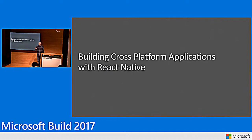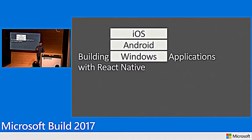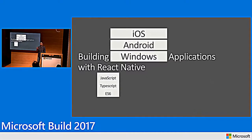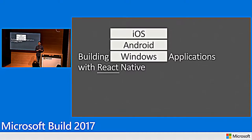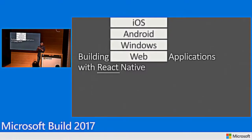Today we're going to be talking about building cross-platform applications with React and React Native. When I say cross-platform, I mean building applications for iOS, Android, and Windows — you are at a Microsoft conference after all. We'll be using React.js, which is just a web framework like Angular or jQuery or Backbone, written in ES6, TypeScript, or plain JavaScript. And because it's all written in JavaScript, it also makes sense to build for the web too. So we're going to attempt to build a sample application that runs on iOS, Android, Windows, and web in the next 20 minutes.